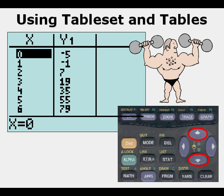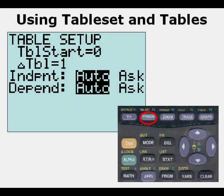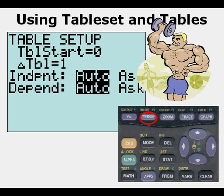We're going to examine an even more powerful feature today called the table set mode where we can change the table view. We access it by pressing second then the window key. It's very powerful. We're going to change table start, the delta table, and the auto to ask. First, with table start...